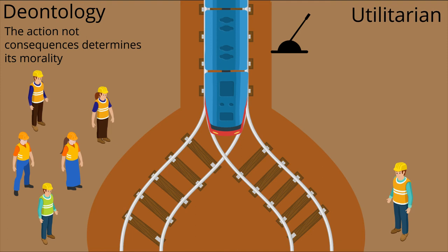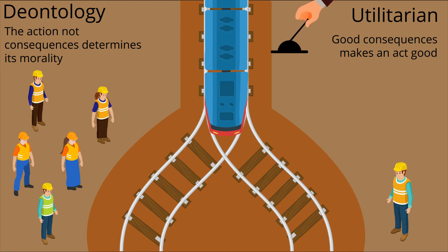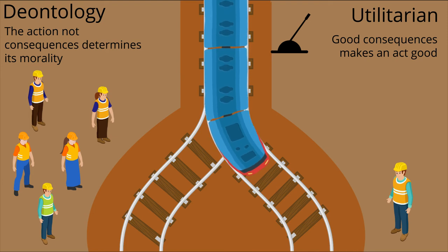Utilitarianism states that the consequences determine an act's morality and that the morally correct act is the one that brings the most satisfaction to the greatest number of people. The utilitarian belief would require you to flip the switch and kill just one person rather than five.